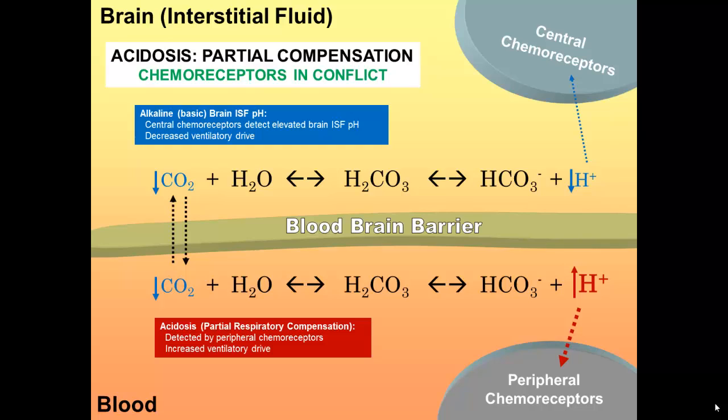And as a result, we will only see a partial respiratory compensation. So the net effect of the tug-of-war between the central chemoreceptors and the peripheral chemoreceptors due to lactic acidosis in this case will be partial compensation stimulated by the peripheral chemoreceptors but limited by the central chemoreceptors.